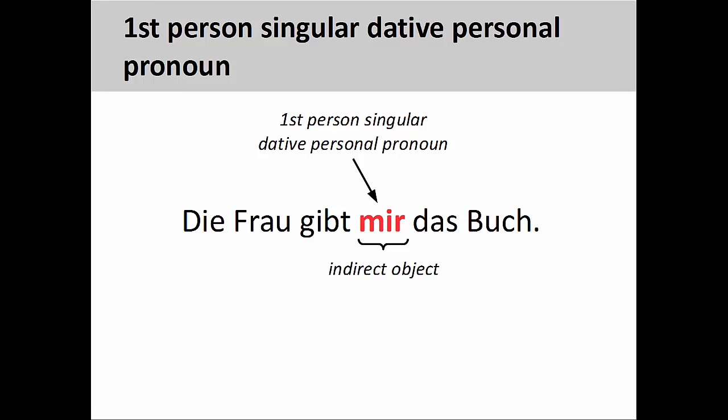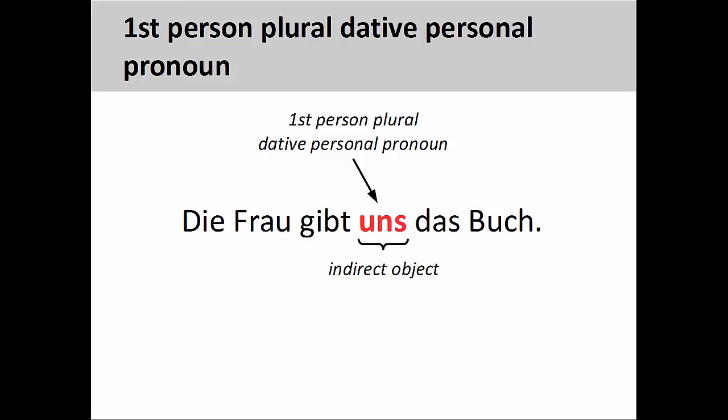Dative personal pronouns do not necessarily have to replace a noun or noun phrase. This happens in the first- and second-person singular and plural. In the sentence die Frau gibt mir das Buch — the woman gives the book to me — the first-person singular dative personal pronoun mir signals that I am the indirect object of the sentence, the recipient of the book. In the sentence die Frau gibt uns das Buch — the woman gives the book to us — the first-person plural dative personal pronoun uns signals that I am situated in a group of people that functions as the indirect object of the sentence.